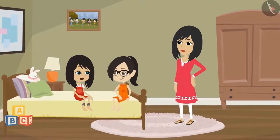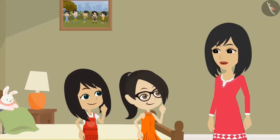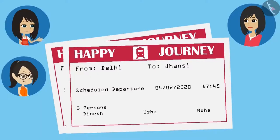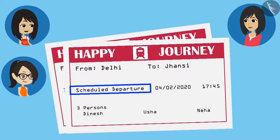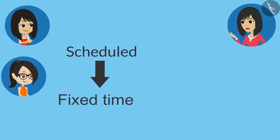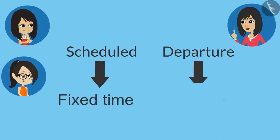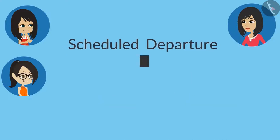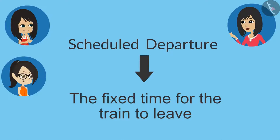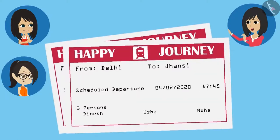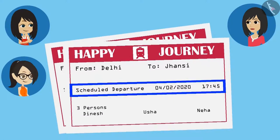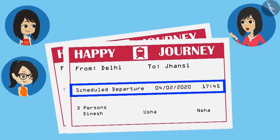Let's go and ask your mummy what is written here. Mummy, we want to ask you something. This is our train ticket. It has scheduled departure written on it — what does this mean? Scheduled means fixed time, and departure means to leave. So scheduled departure means the time fixed for the train to leave — that is, the train will leave from the platform at this time. So we have to board the train before this time. This means this information is showing the time? Yes, it is showing both the starting date of the journey and the time of the train.